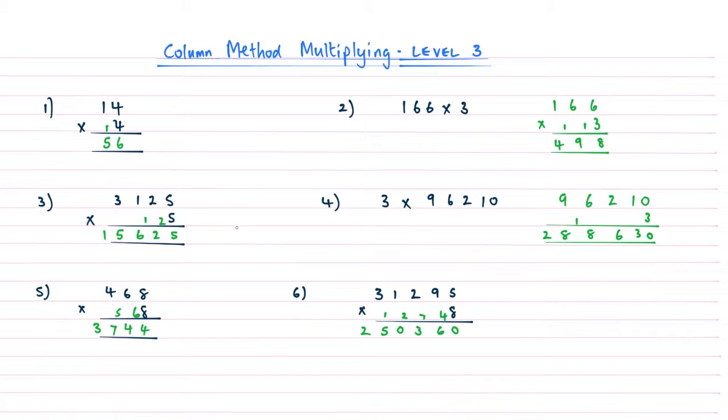Question 1 is 56, question 2 the answer is 498, question 3 is 15,625, question 4 the answer is 288,630, the answer to question 5 is 3,744, then the answer to question 6 is 250,360.